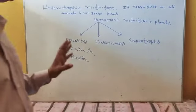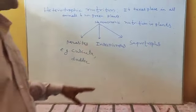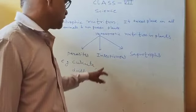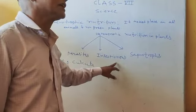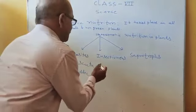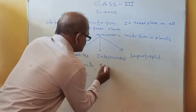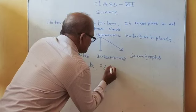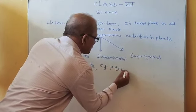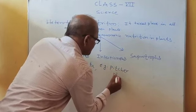Why does the pitcher plant eat insects? Because it has a nitrogen deficiency. It gets its nitrogen by eating these insects, so it is called an insectivorous plant. The example for this is pitcher plant.